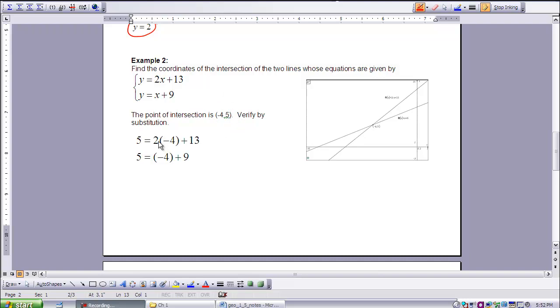We can verify that is the correct point by inserting these coordinates in place of x and y. We put -4 in place of x and 5 in place of y. We find that 2 times -4 is -8 plus 13, which equals 5. And with the second equation, -4 + 9 does equal 5. This point does meet both equations. That is the intersect point for these two lines and the solution to this system.